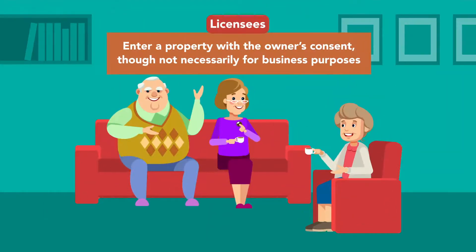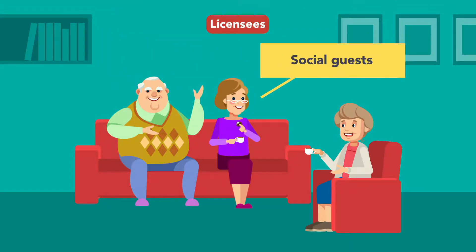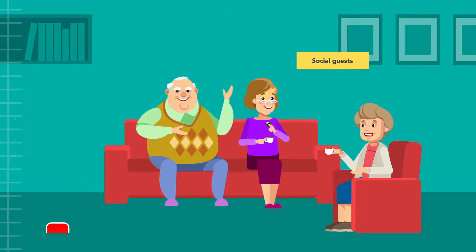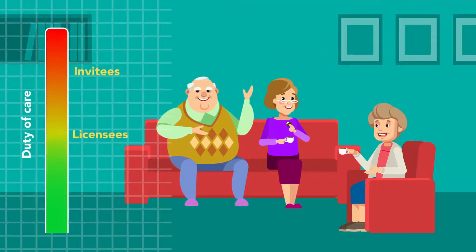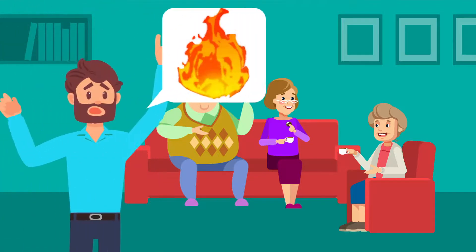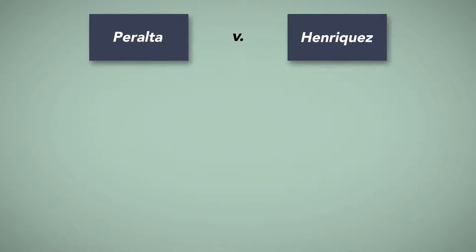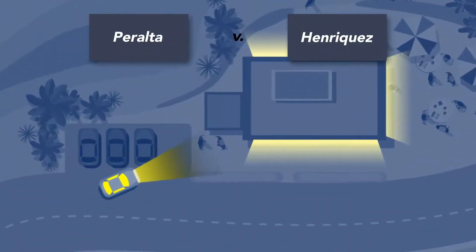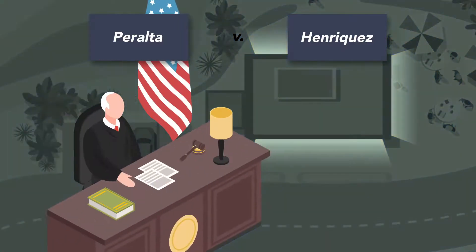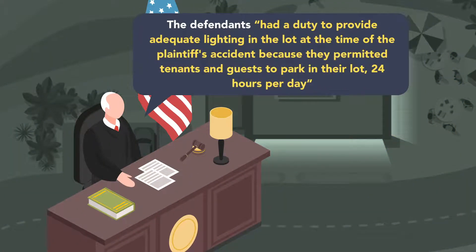Licensees enter a property with the owner's consent, though not necessarily for business purposes. Licensees may include social guests, for example. Though the duty of care is not as high for licensees, owners still have a duty to keep the premises in safe condition, or at the least, to warn licensees of known dangers. Peralta v. Enriquez was brought by a houseguest who was injured while trying to maneuver through a dark parking lot owned by the defendant. Finding in favor of the plaintiff, the New York court held that the defendants had a duty to provide adequate lighting in the lot at the time of the plaintiff's accident, because they permitted tenants and guests to park in their lot 24 hours per day.